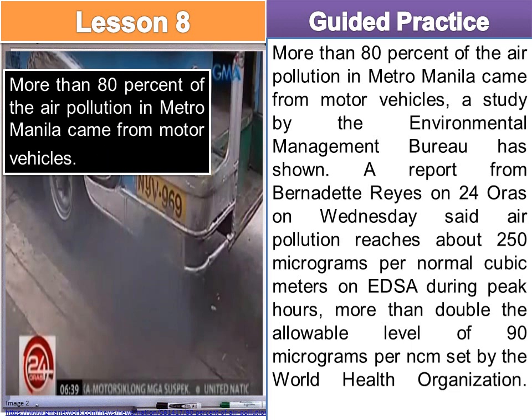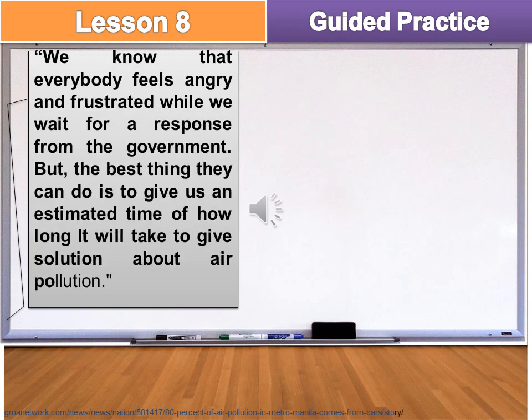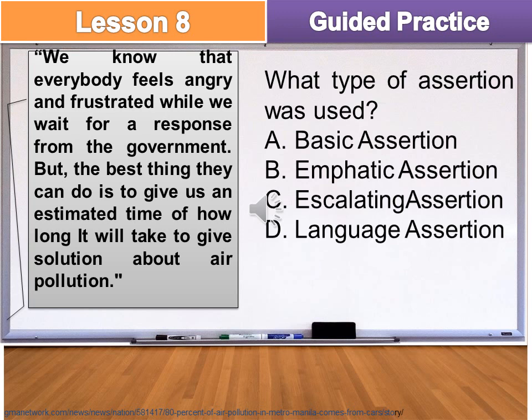Let's read the next text silently. Statement about the next text: 'We know that everybody feels angry and frustrated while we wait for a response from the government, but the best thing they can do is to give us an estimated time of how long it will take to give a solution about air pollution.' What type of assertion was used? A. Basic, B. Emphatic, C. Escalating, D. Language. The answer is letter B — Emphatic Assertion — because the reader recognized the feelings of other people. The reader was frustrated about the slow action of the government regarding air pollution.